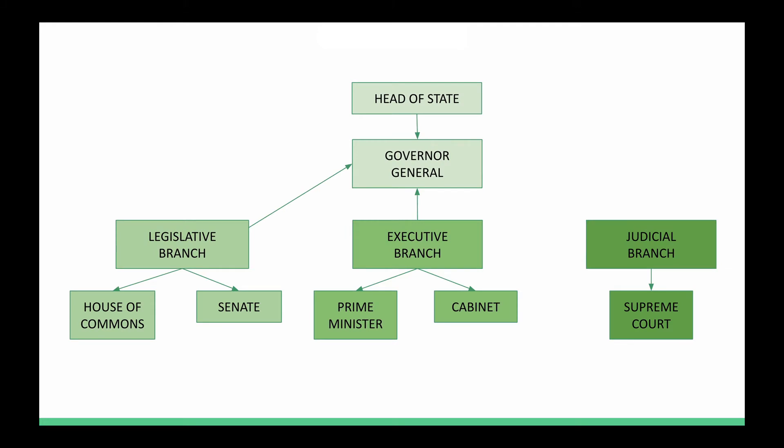At the top of our government, we have the head of state, represented by the Governor General. On the left-hand side we have the legislative branch — everyone in the House of Commons and the Senate, including the Governor General. In the middle is the executive branch: the Prime Minister and cabinet. Separate from both is the judicial branch, which includes the Supreme Court of Canada.